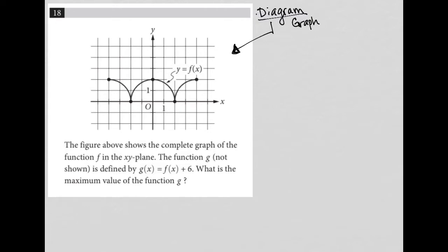Whenever I see a graph, I pay very close attention to the points on that graph. So for instance, this point here, let's see, this y value would be 2. This is negative 1, negative 2, negative 3, and negative 4.